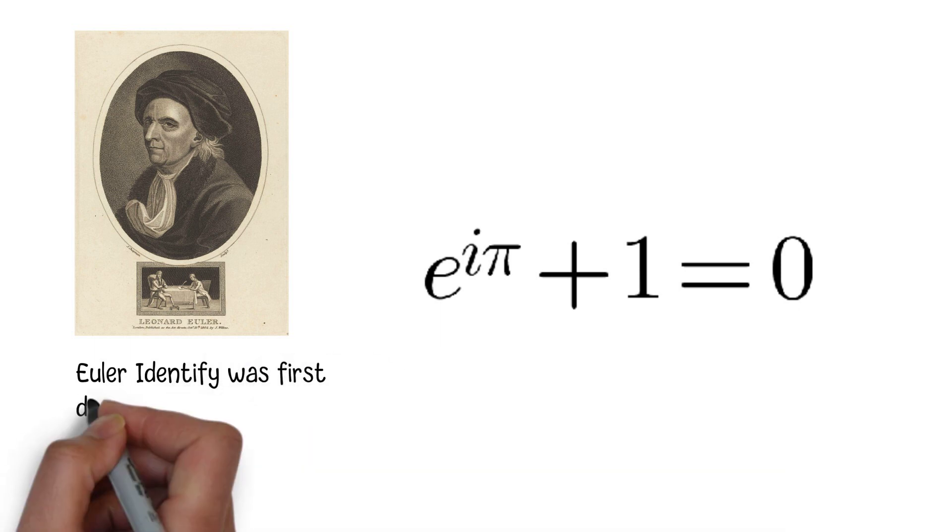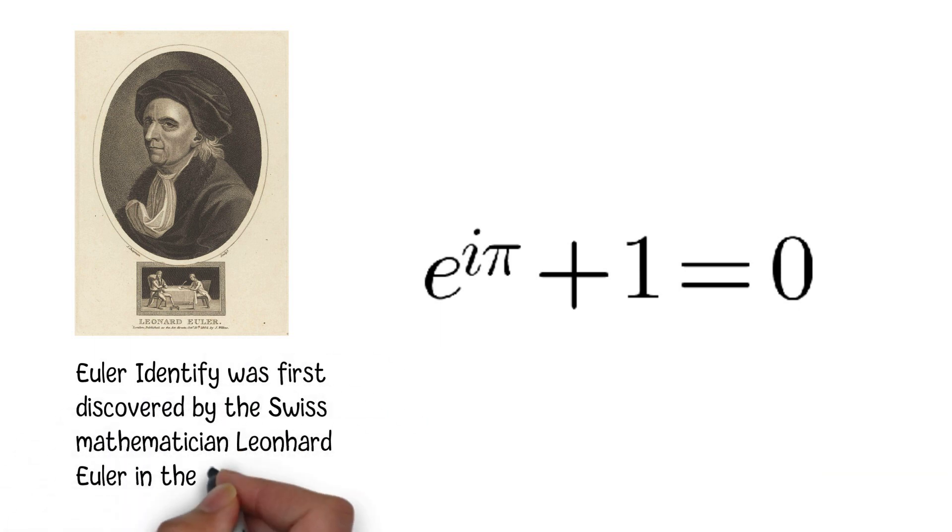It was first discovered by the Swiss mathematician Leonard Euler in the 18th century. In the 1740s, Euler was working on the theory of complex numbers and their properties.